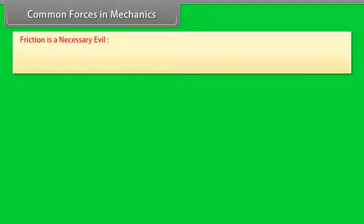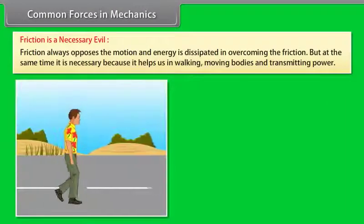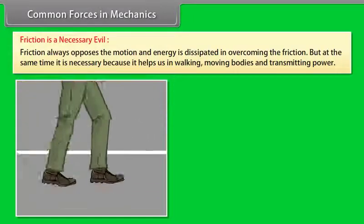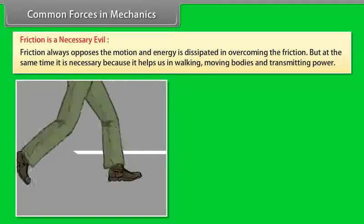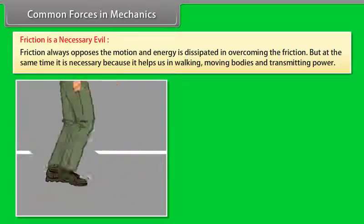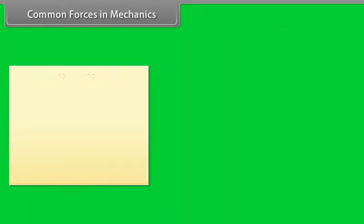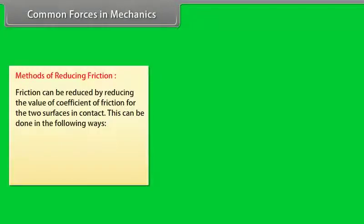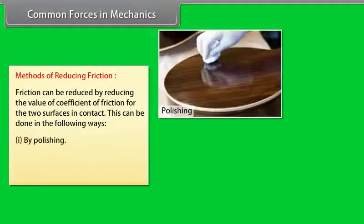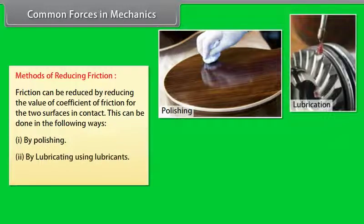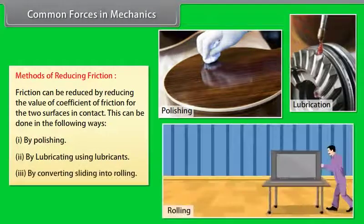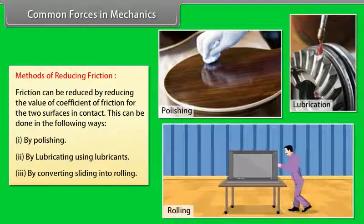Friction is a necessary evil. It always opposes motion and energy is dissipated in overcoming it, but it is necessary as it helps us in walking, moving bodies, and transmitting power. Methods of reducing friction include: (1) polishing, (2) lubricating using lubricants, and (3) converting sliding into rolling.